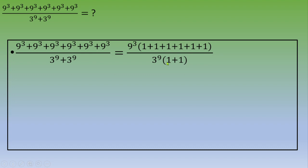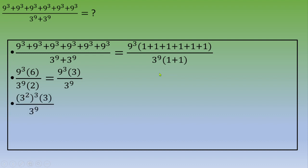So we get 9 cubed times 6 over 3 to the power 9 times 2. Since 6 divided by 2 is 3, we now modify the 9 in the numerator: 9 becomes 3 squared, so the numerator becomes 3 squared to the power of 3, times 3.